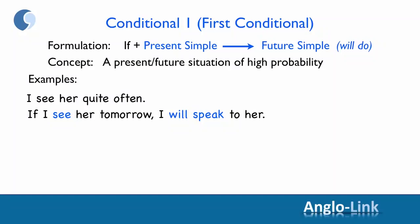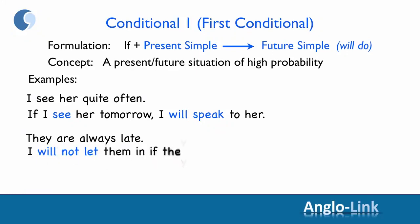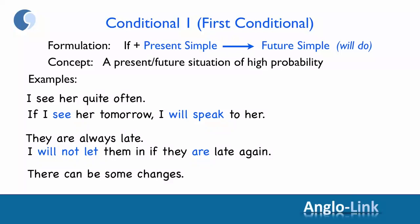Another example: 'They are always late, so there is a high probability that they will be late again. I will not let them in if they are late again.' A final example: there can be some changes — there is a high probability of changes. 'If anything changes, we will let you know.'